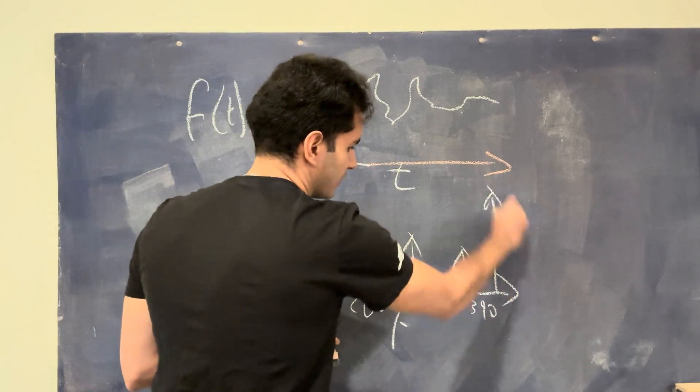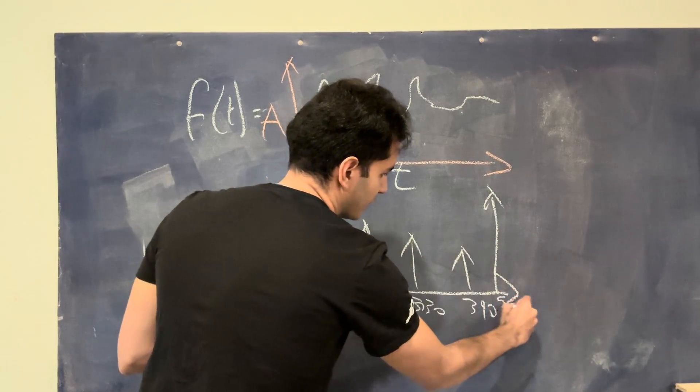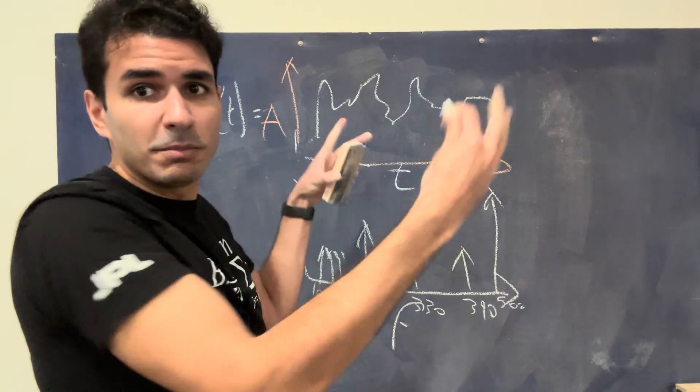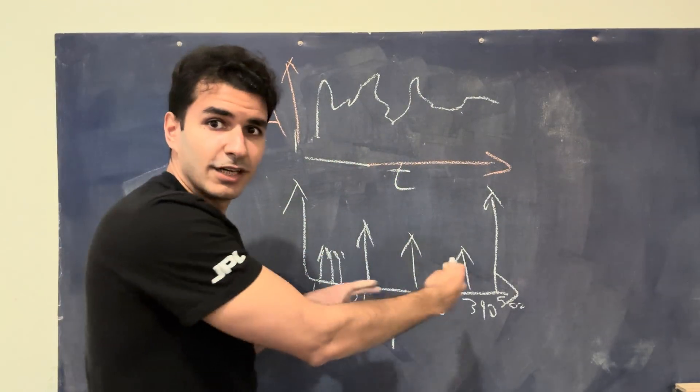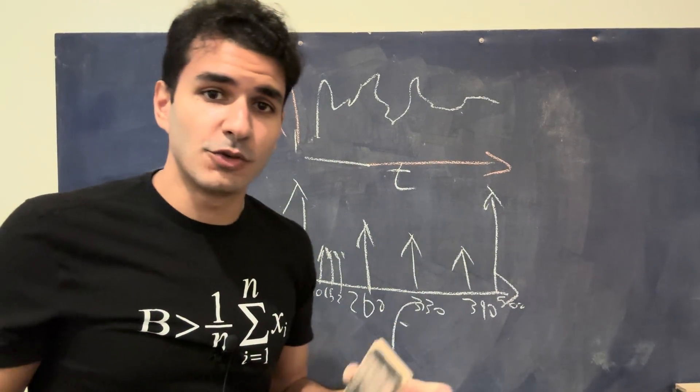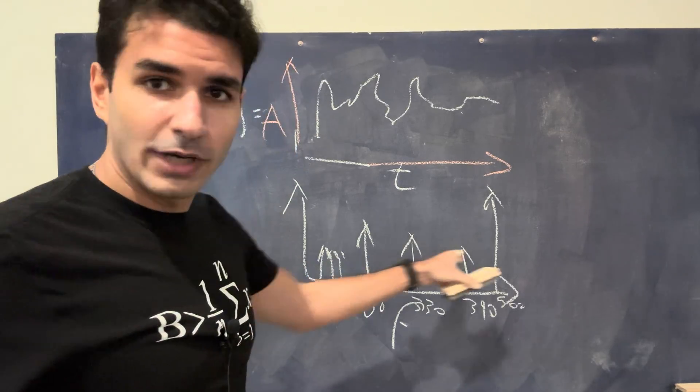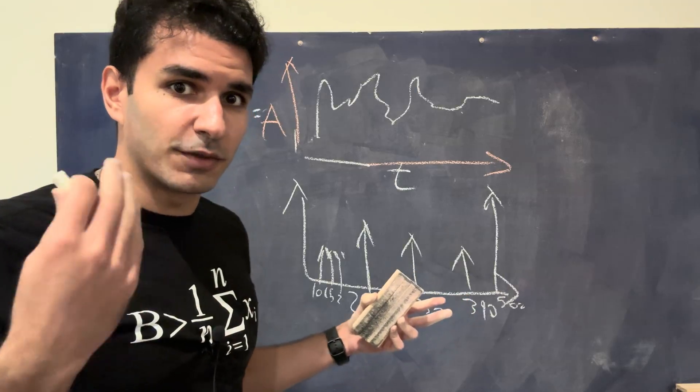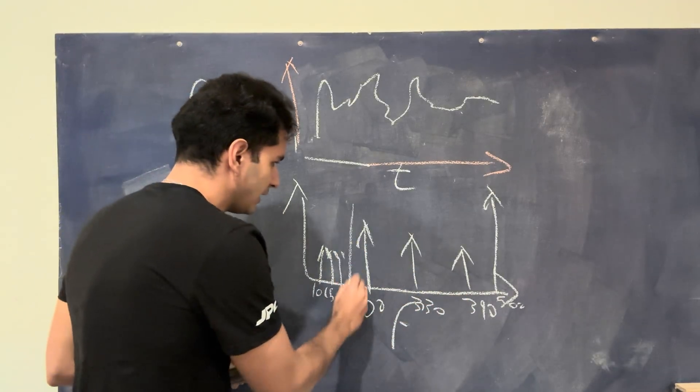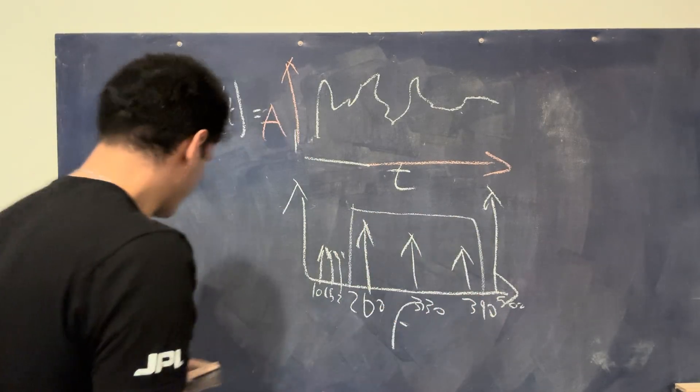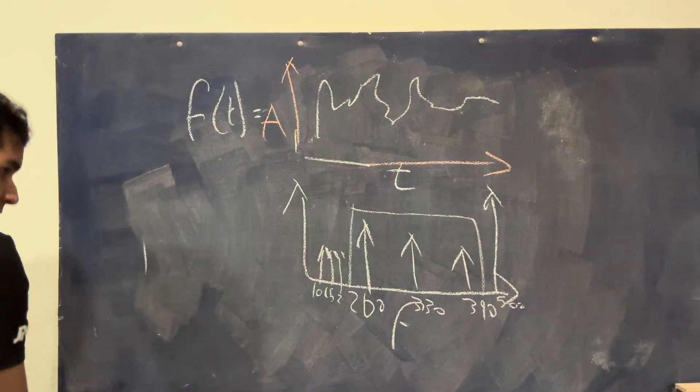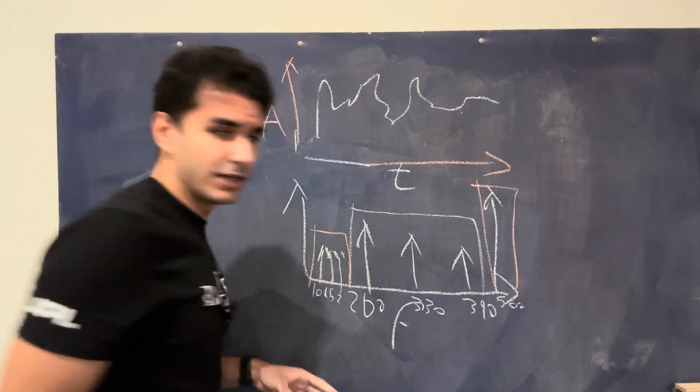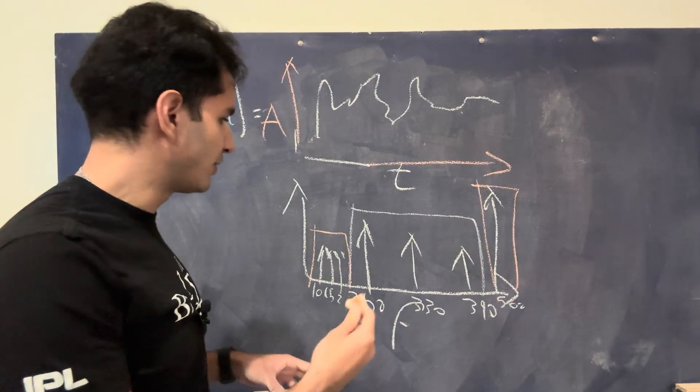So the Fourier transform is able to take this jumbled up signal and break it down to its actual components. And basically what a noise canceling headphone does simply once you analyze these frequencies, and you know what your song or sound or audio or waveform is supposed to look like, I know that I only need to have this in my system. So then I basically go ahead and I use a filter to cancel out these components that are not desirable.